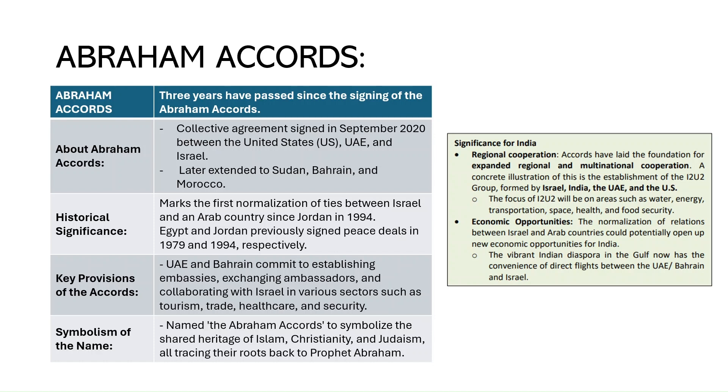The Abraham Accord is a collective agreement signed in September 2020 between the United States, UAE, and Israel. It was later extended to Sudan, Bahrain, and Morocco. This was recently back in news after the Israel-Palestine conflict.